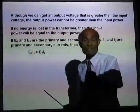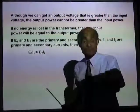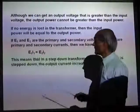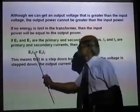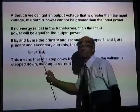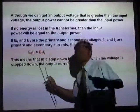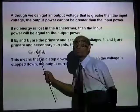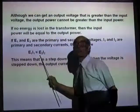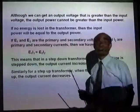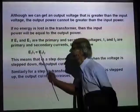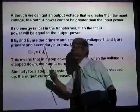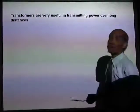In practice, some power is lost in the transformer as heat and sound, so ideal efficiency is not achieved. For a step-down transformer, when E2 becomes less than E1, I2 will be greater — the output current is greater than the input current. Similarly, for a step-up transformer, when you step up the voltage you step down the current. You cannot step up both at the same time.